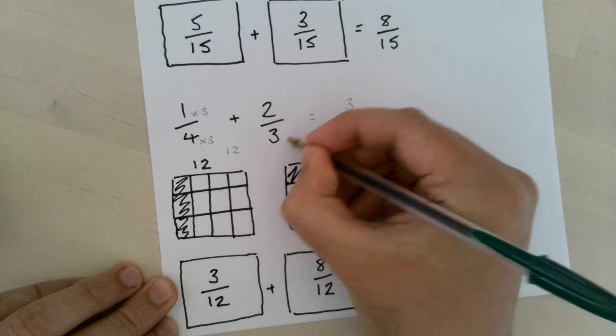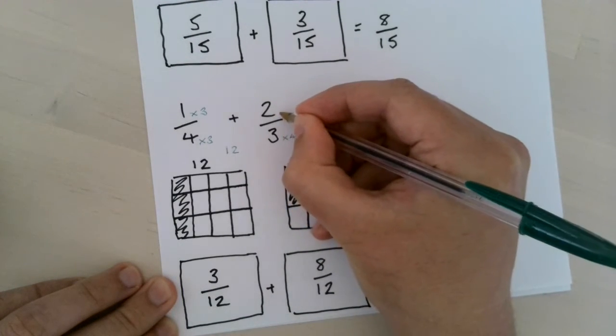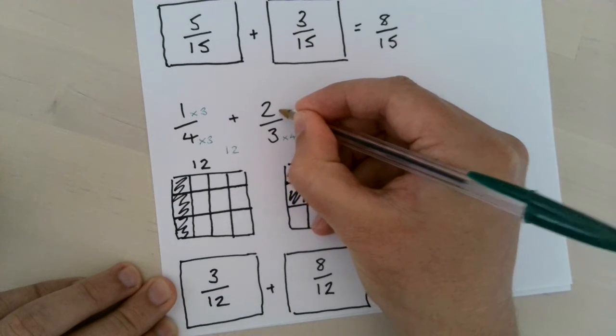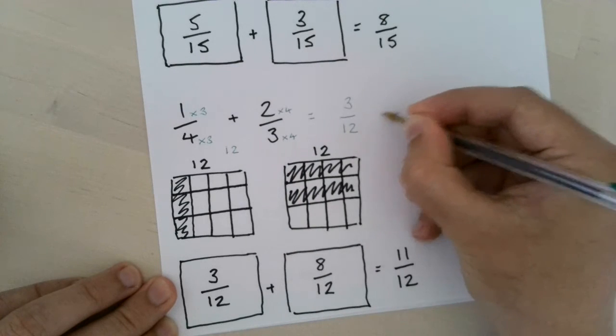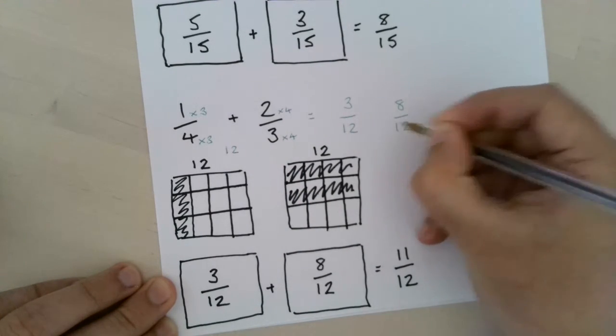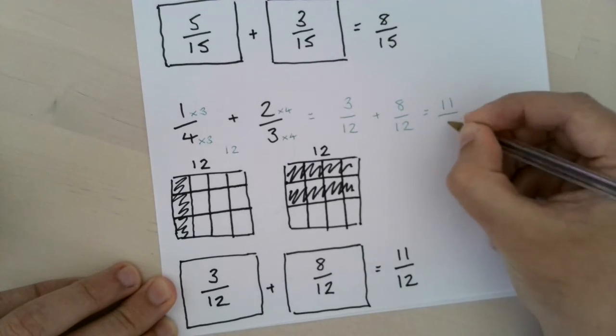So we've now got multiply 3 by 4, that's 12, and what we do to the denominator we must do to the numerator, times that by 4 which leaves us with 8. We've got 8 over 12, add those two together leaves us with 11 over 12.